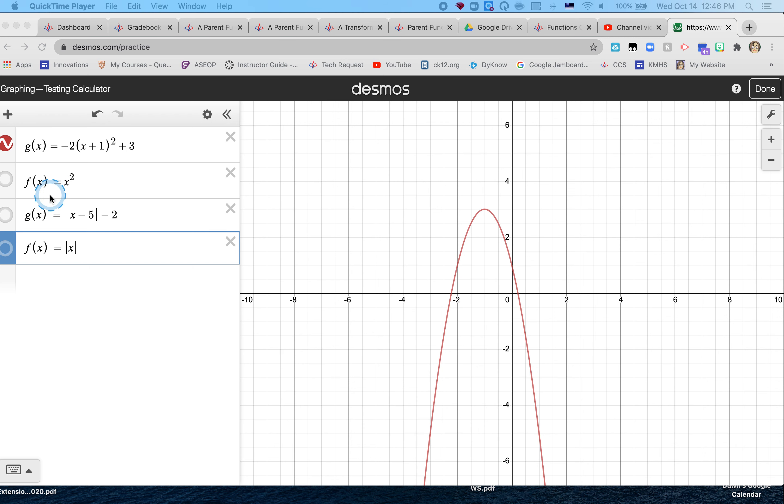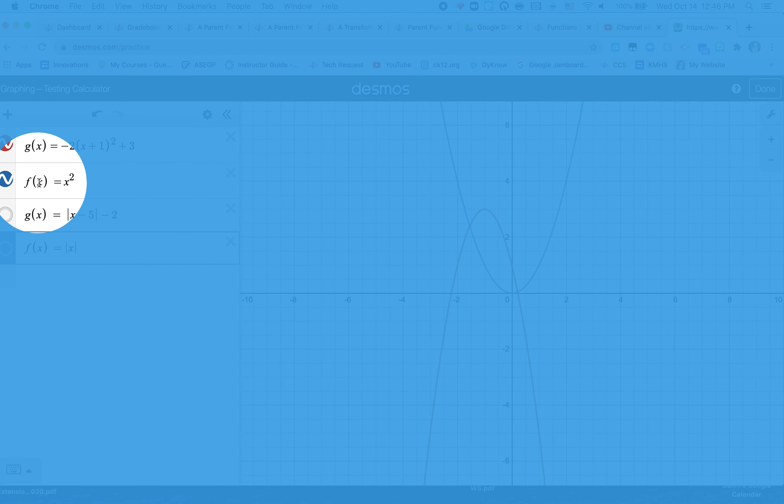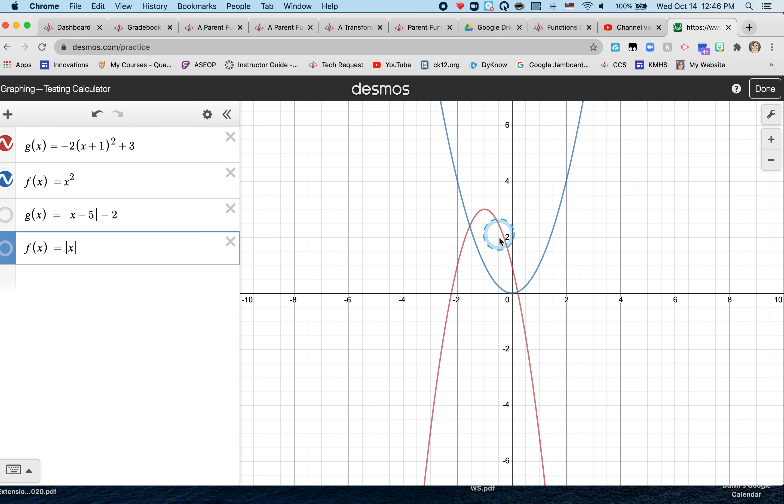So a parabola shaped I know that is a quadratic. So a quadratic is f(x) squared. So the parent function f(x) is x squared because the shape is a parabola.